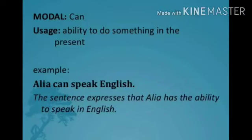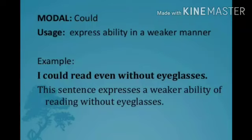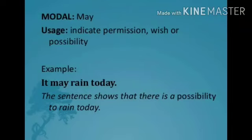Our next modal verb is 'could'. Could is used to express ability in a weaker manner. For example, 'I could read even without eyeglasses.' Could is also used to show the past tense of ability. Next is 'may'. May is used to indicate permission, wish, or possibility.